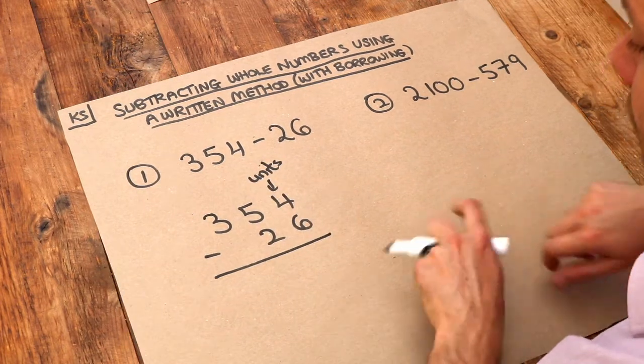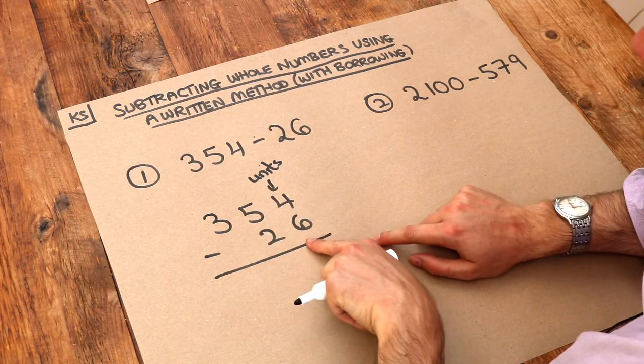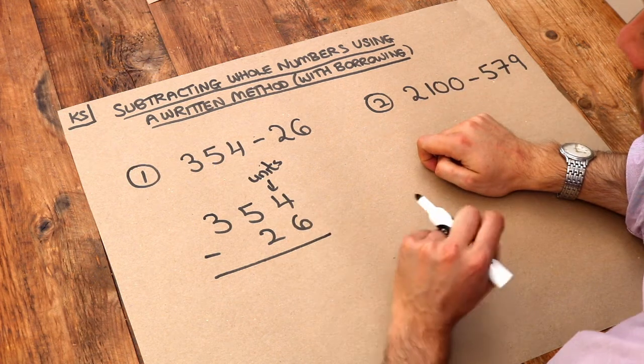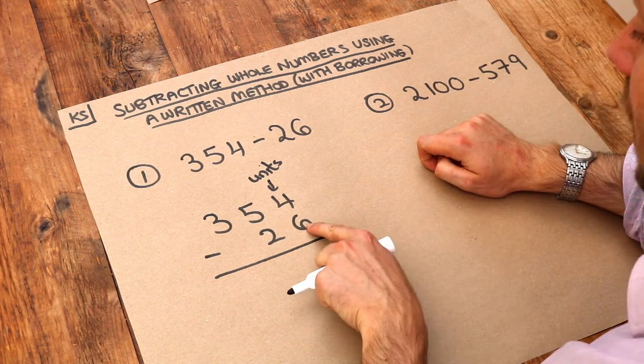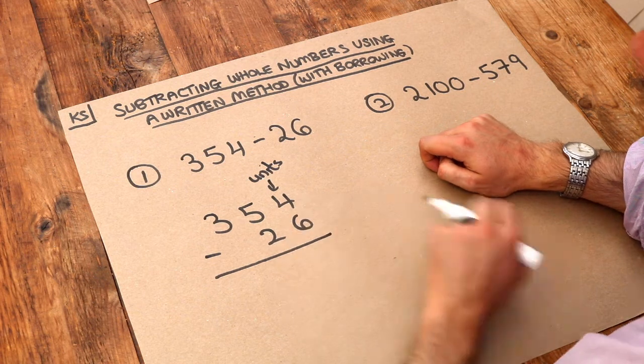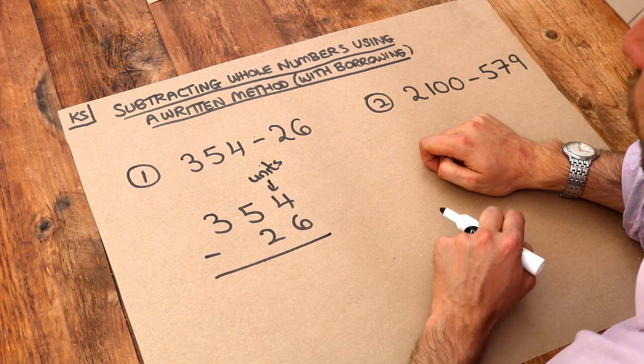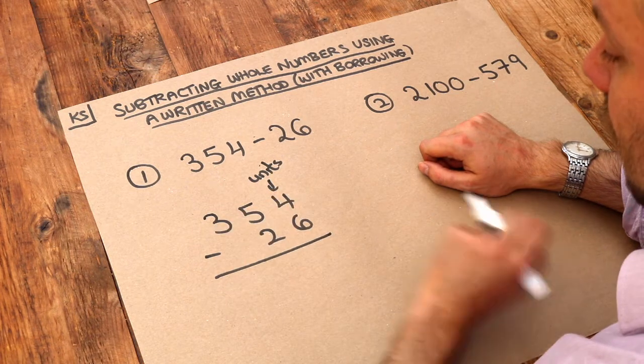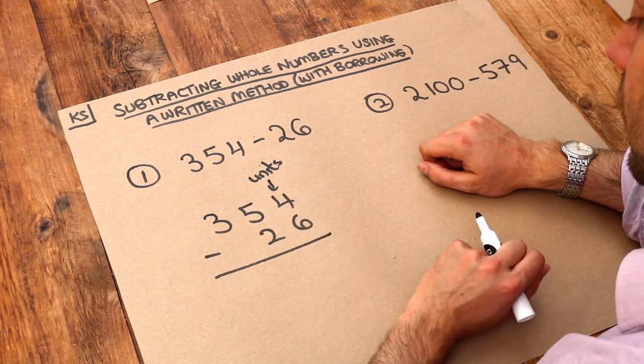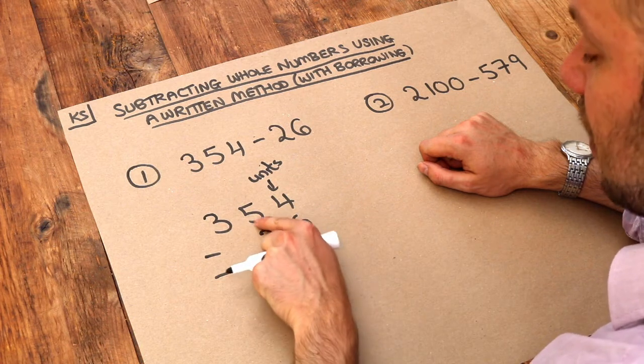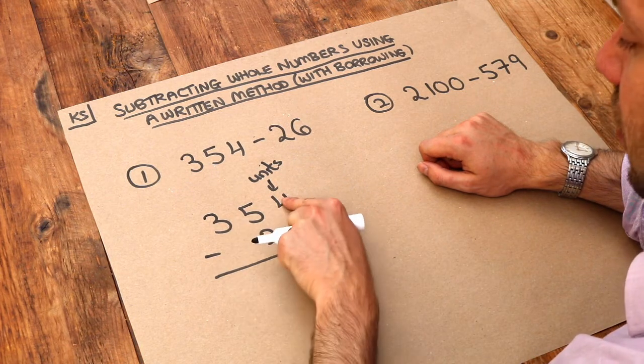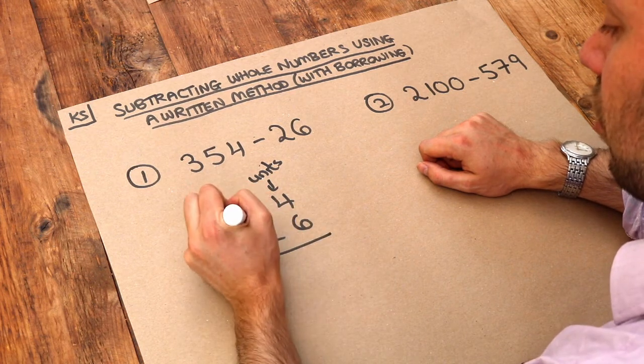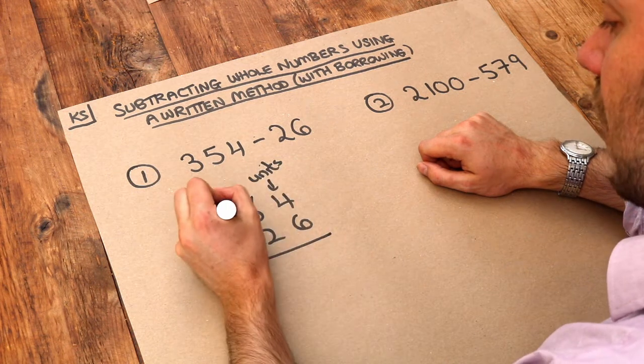We look at the rightmost column first and do the subtraction, so we want to do 4 minus 6. But the problem is we're subtracting a bigger number from a smaller number, so we have to borrow from the next column to the left, the tens column. We can sacrifice one of these tens here, so just to the left of that 4 we can sacrifice one. We're going to reduce these 5 tens to four tens, so that goes down by one.